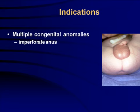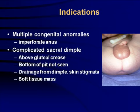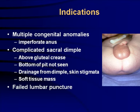Why do we look at the spine? We know that there are anomalies associated with tethered cord and spinal anomalies. These include imperforate anus. With sacral dimples that are complicated — either they're above the gluteal crease, there is a very deep pit, there's drainage from the dimple, or there's a soft tissue mass — all of these have a higher incidence of cord anomalies. We can also use spine ultrasound in patients who have a failed lumbar puncture.